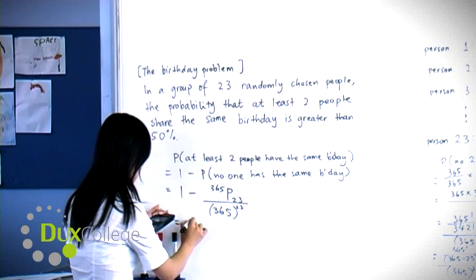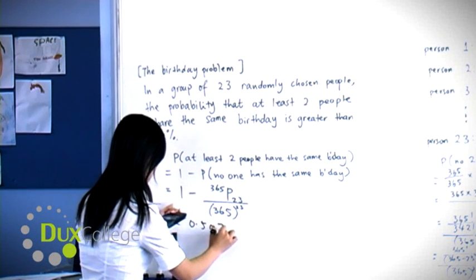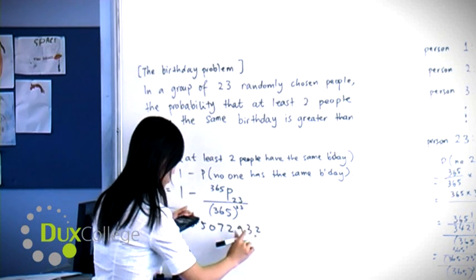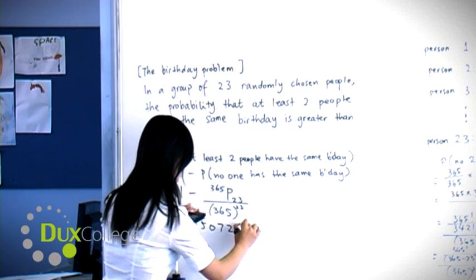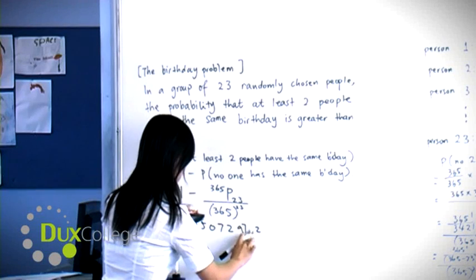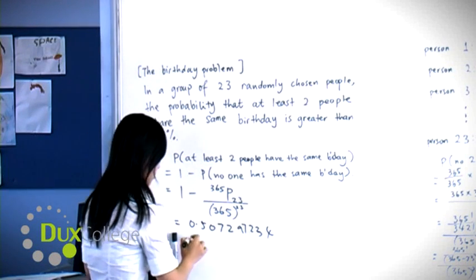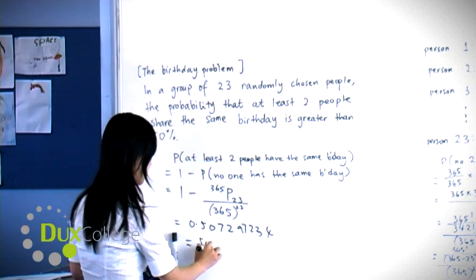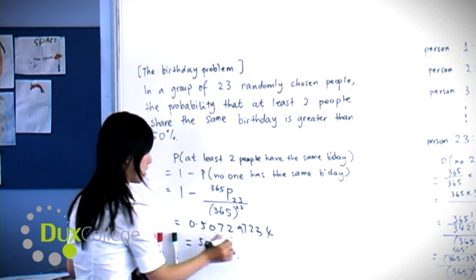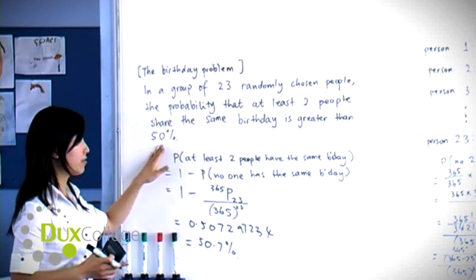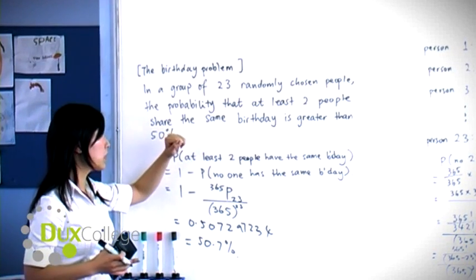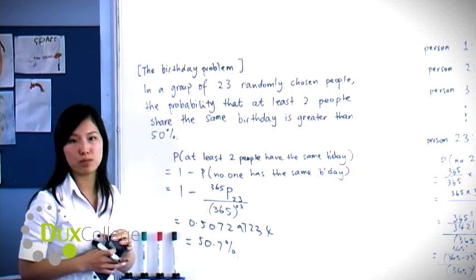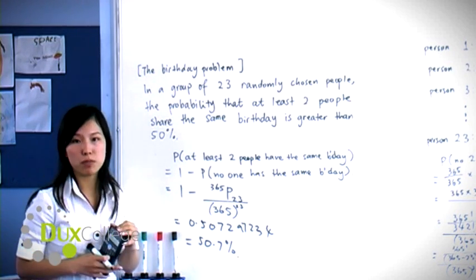And that's equal to 0.49270670277, which is equal to 49.3%. So one minus that equals 50.7%, which is more than 50% that at least two people will share the same birthday out of 23 randomly chosen people in a room.